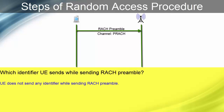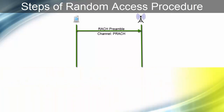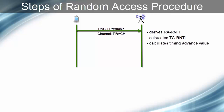UE does not send any identifier while sending RACH preamble. eNodeB calculates the UE identifier called RA-RNTI by the timing of preamble transmission. If two different UEs transmit preamble at the same time, eNodeB will derive the same RNTI for both UEs. After receiving the random access request, eNodeB derives RA-RNTI from the time slot number in which preamble is received, calculates TC-RNTI for the UE — TC-RNTI stands for Temporary Cell Radio Network Temporary Identifier and is used for further communication between UE and eNodeB. eNodeB also calculates the timing advance which is transmitted to the UE as part of the response message, and determines the information that will be used by UE for sending the L3 or L2 message.